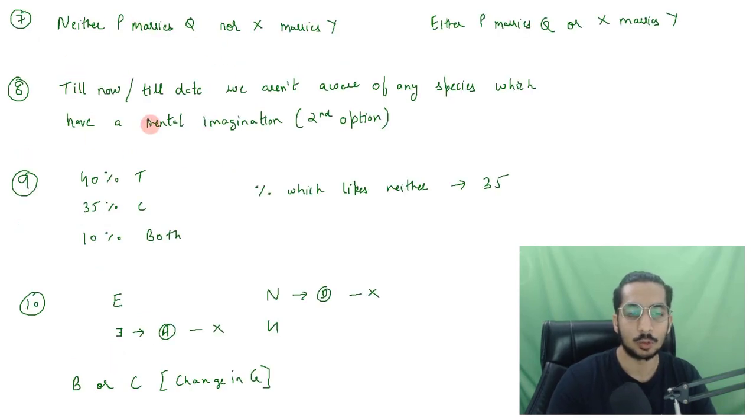And then, the next question was that it was given to us that a statement was given either P marries Q or X marries Y. And then, four statements were given and we had to answer the statement which negates this, which negates the conclusion of this particular statement.